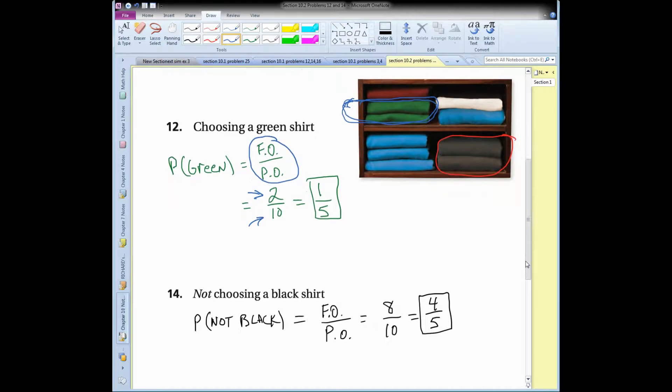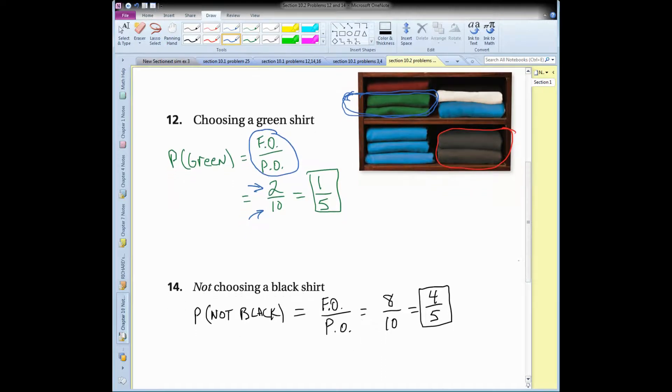Let's look at number 14. Number 14 says not choosing a black shirt, so the probability of not choosing black. Here's the black shirts, and I'm not going to choose these. So these are off limits.